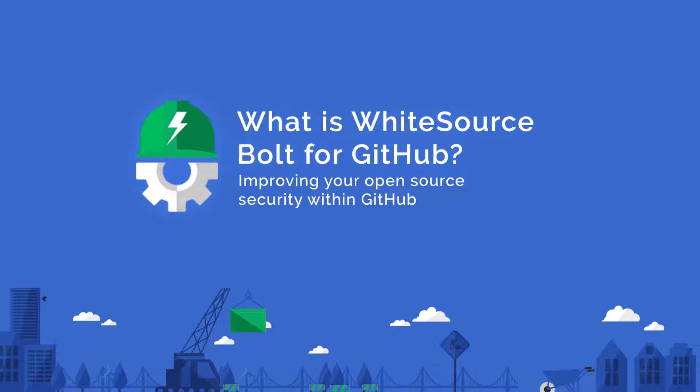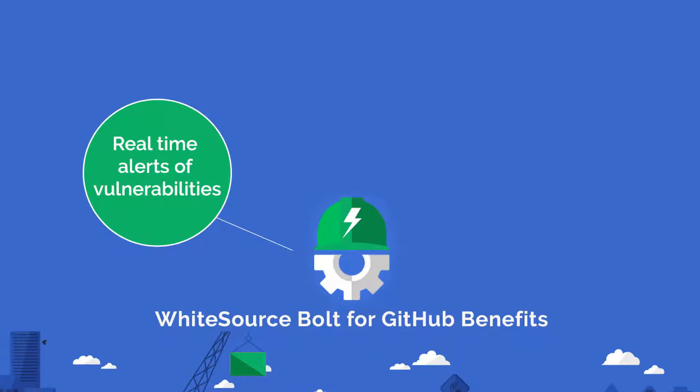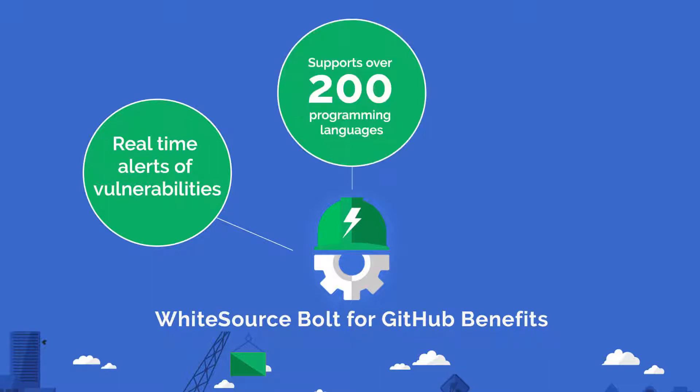So what makes this app so special? Whitesource Vault for GitHub alerts on vulnerable open source components in real time within your GitHub repositories. It supports over 200 programming languages,